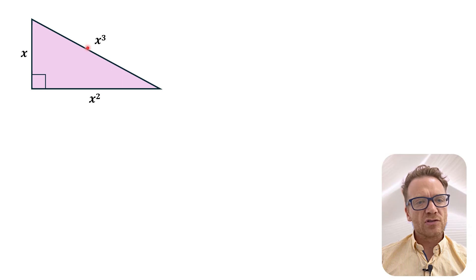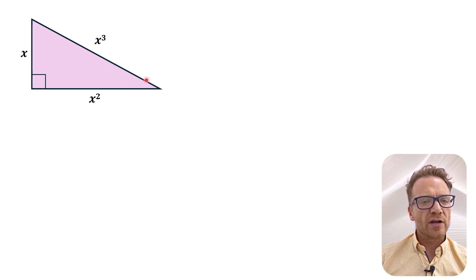Okay, so the first thing we can actually do here is find a similar triangle and to do that we can divide each side length by a common value. So in this case we're going to divide everything by x to get the following. So we have height of 1, base of x, and hypotenuse of x squared.